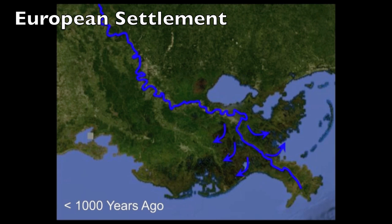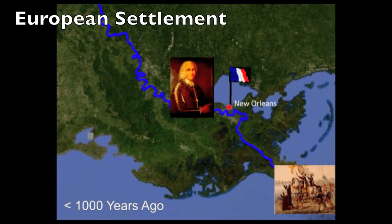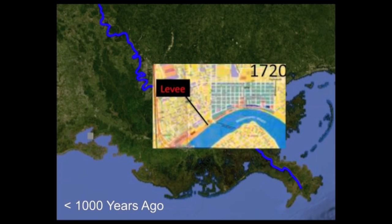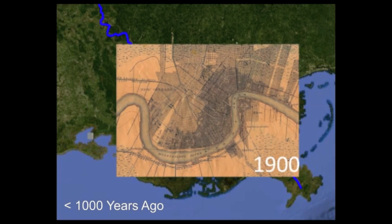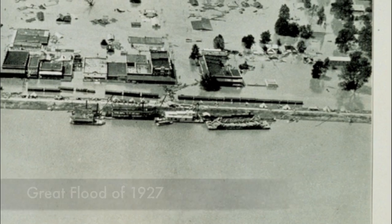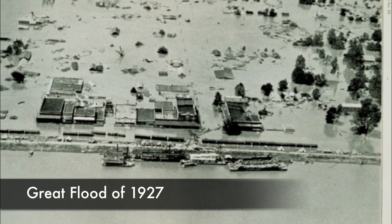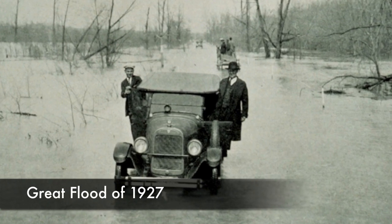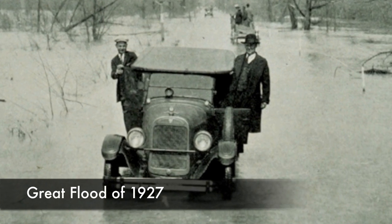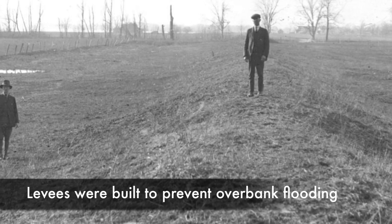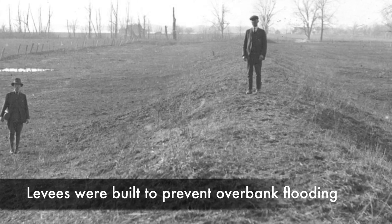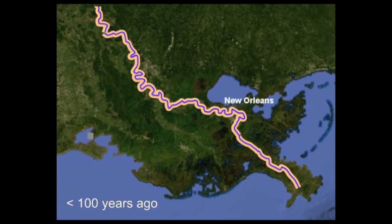Then Europeans arrived on the scene and established New Orleans in a bend of the Mississippi River. To prevent flooding of New Orleans, levees were built and extended as the city grew. Then in the 1920s, there were catastrophic floods such as the Great Flood of 1927. Disastrous flooding prompted the construction of levees, which eventually extended the entire length of the lower part of the river.